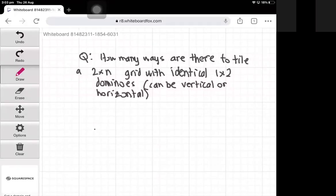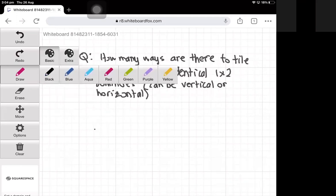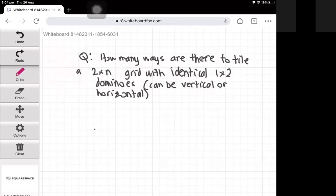Hello, in this video we have a look at the question of how many ways are there to tile a 2×n grid using identical 1×2 dominoes. The dominoes can be aligned horizontally or vertically.